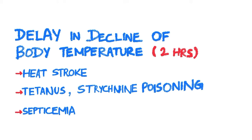There are certain conditions where there can be a delay in the decline of body temperature. In heat stroke the decline can happen after 2 hours rather than the usual 1 hour, because the body temperature is already very high at the time of death. It is also delayed in tetanus and strychnine poisoning, conditions with excessive muscle contraction producing excessive heat. Septicemia also causes a delay because of already increased heat production from fever at the time of death.